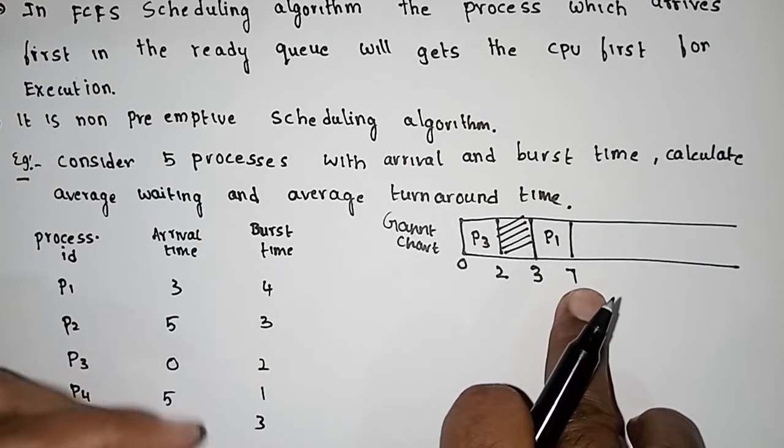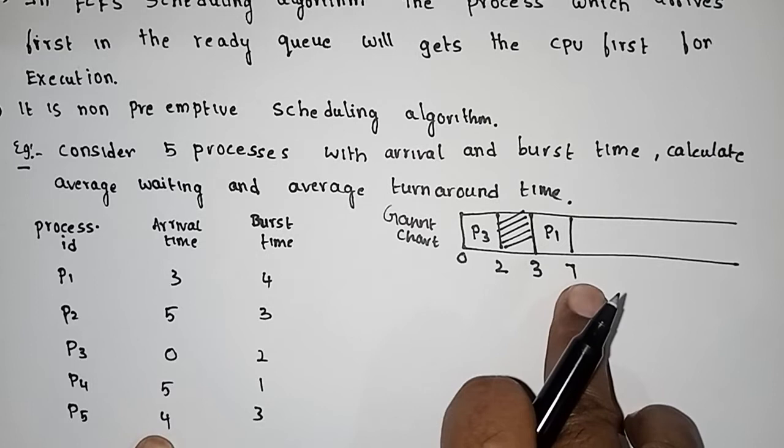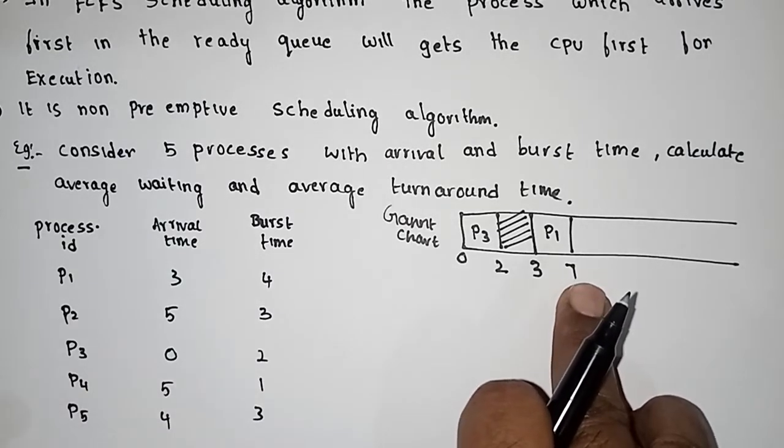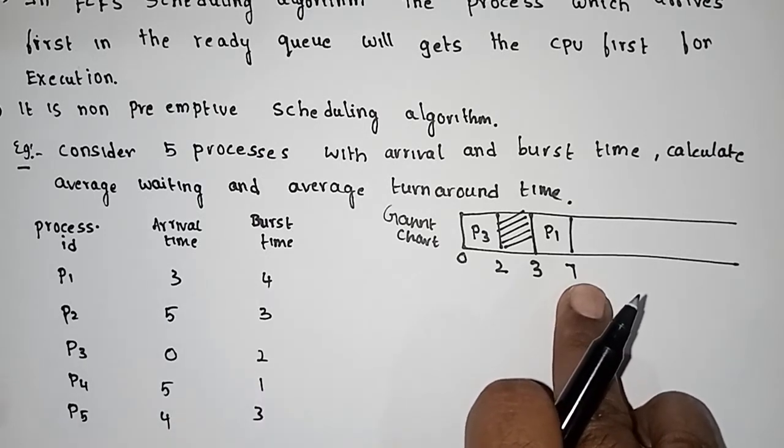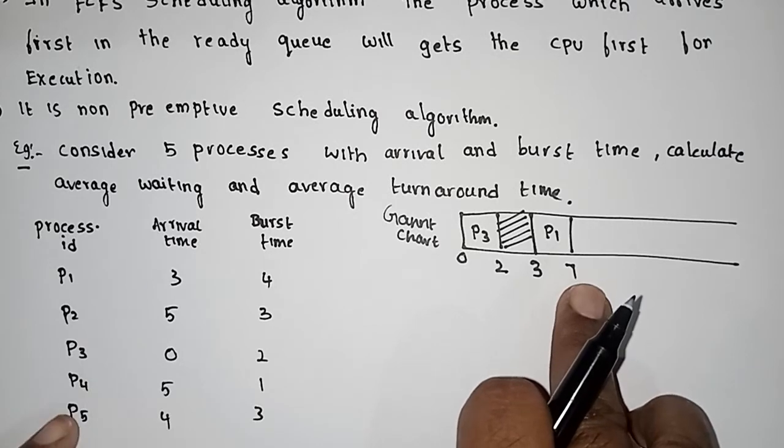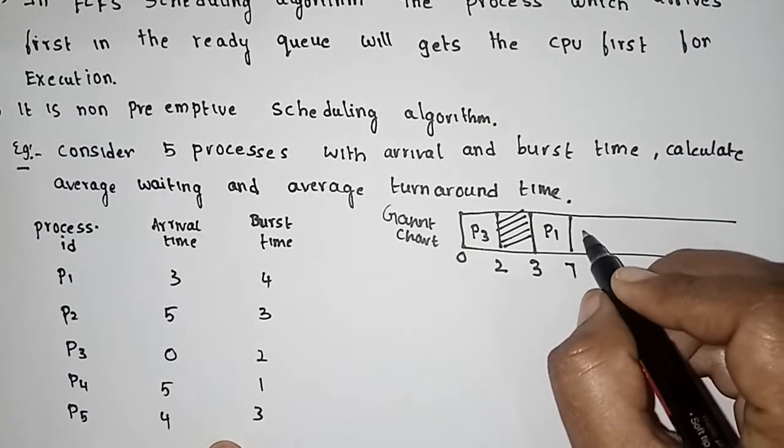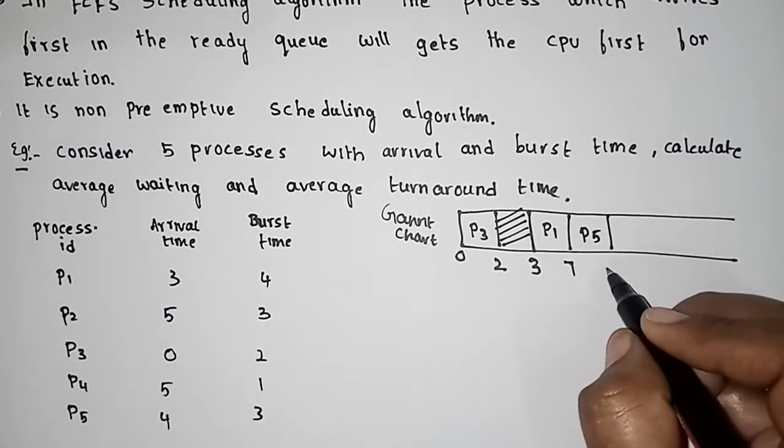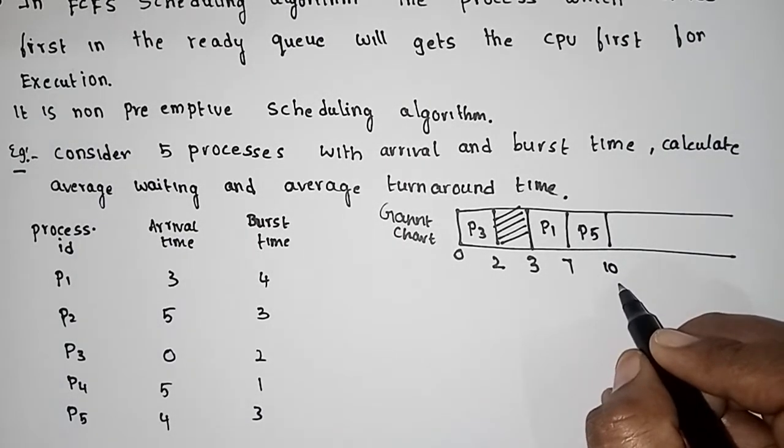At 7 units of time, there are multiple processes at 4 and 5. Whichever process arrives first in the ready queue according to the FCFS rule gets the CPU.